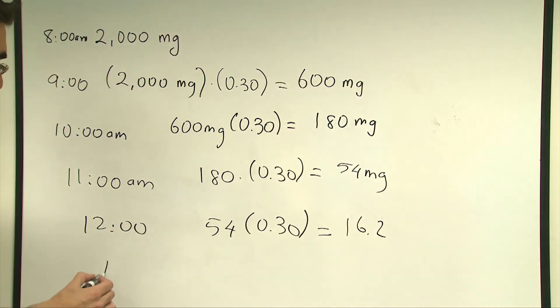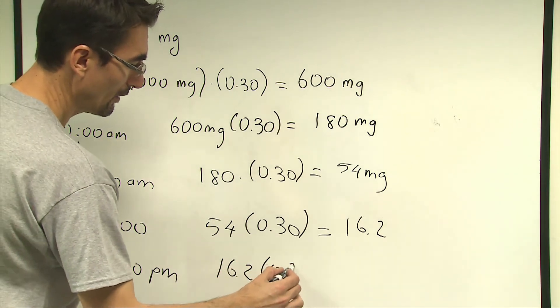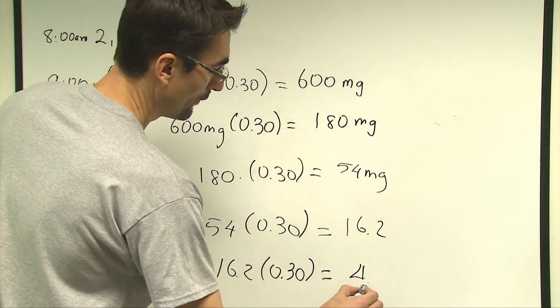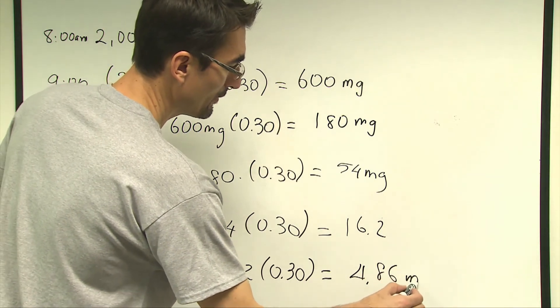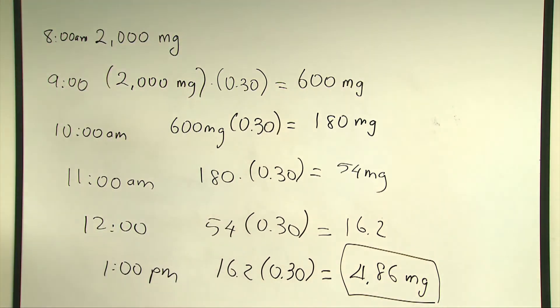And finally, at 1 p.m., it will be 16.2 multiplied by 0.30, which we will end up with 4.86 mg of the medicine left in the patient's body. As you see, this amount is considerably lower, much lower than the 2,000 mg that's been in the patient's body at 8 a.m.